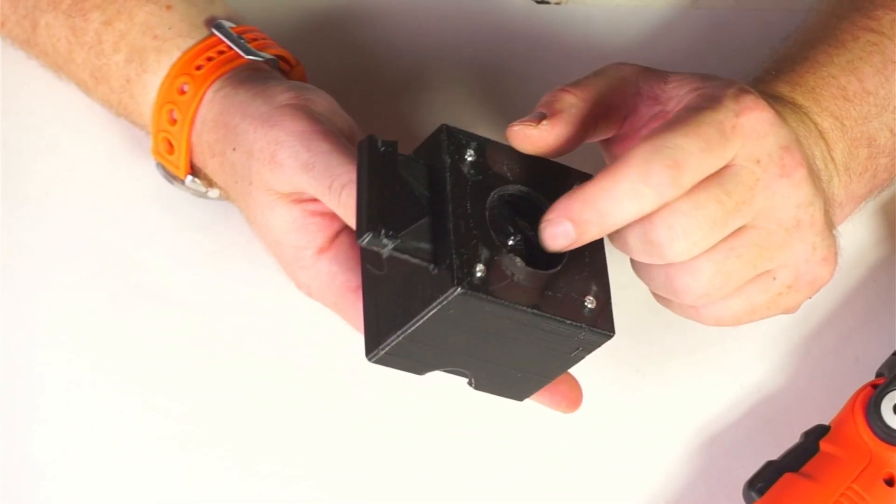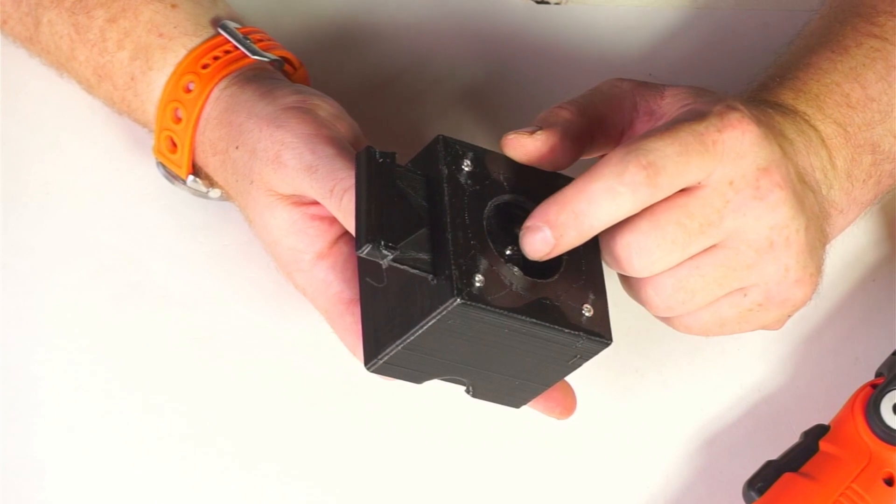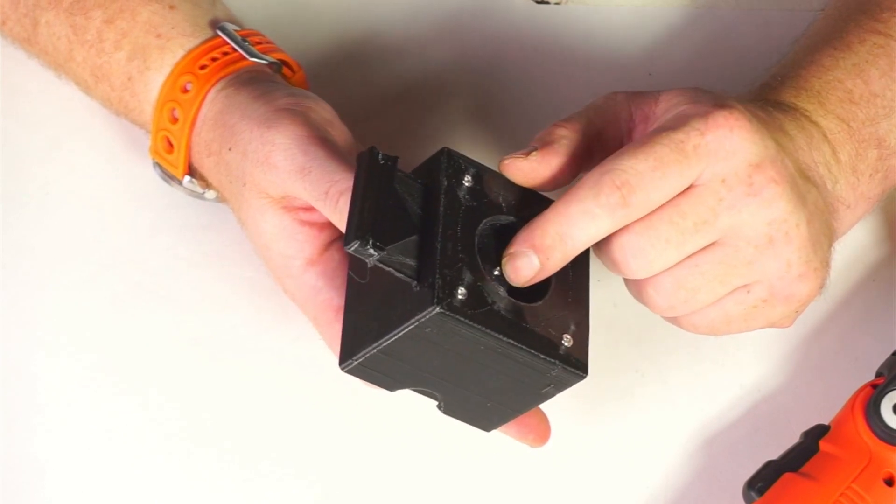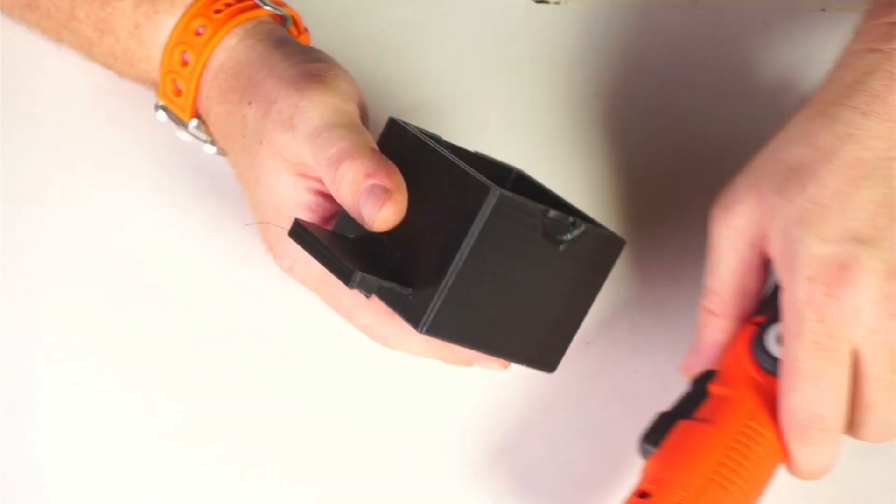And you don't want it to come through at all. You want the face of the bolt to be flush with the front of the dark slide. So I'm going to back this out just a little bit and trim it flush.